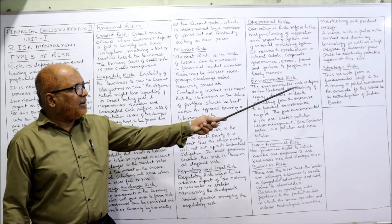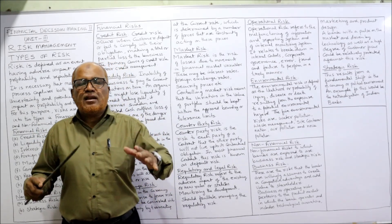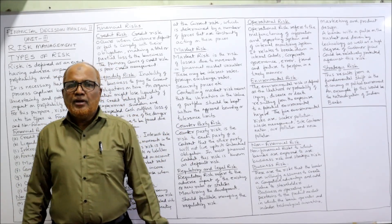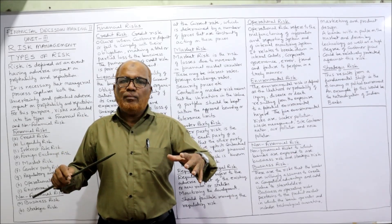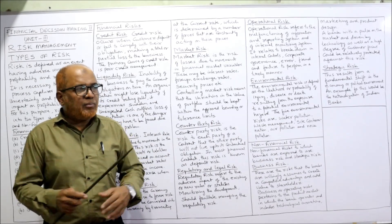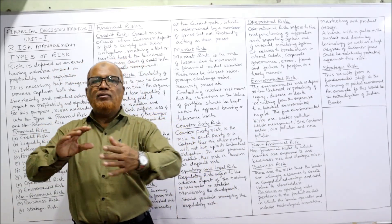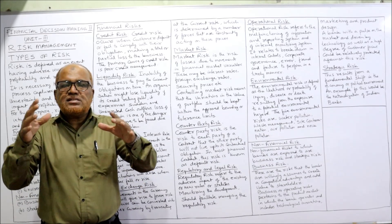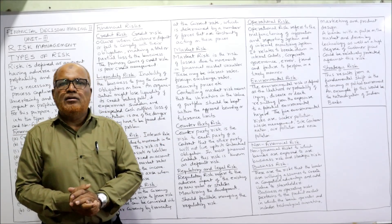The last one is strategic risk. Strategic risk results from a fundamental shift in the economy or political environment. It is the risk which arises due to a fundamental shift in political or economic aspects — for example, an all-of-a-sudden change in government policy or a change in the economic system. An example of strategic risk is nationalization — for instance, the nationalization of Indian banks. All of a sudden the government implements a policy of nationalizing or privatizing a sector. These are strategic risks which take place due to a completely fundamental shift in the economy or political system.